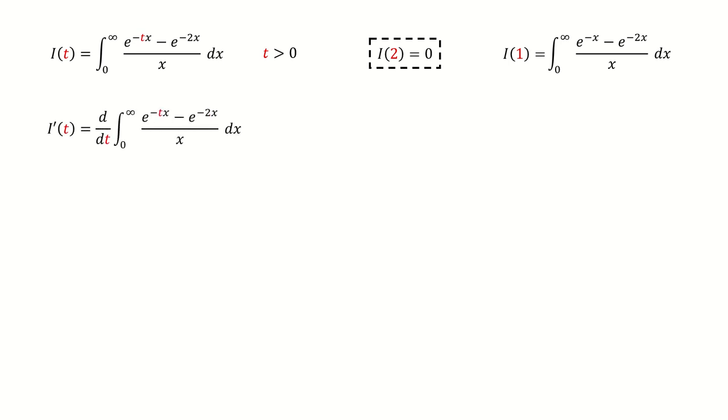Now we use Feynman's trick. Note here, this derivative is respect to t, so we treat x as a constant.